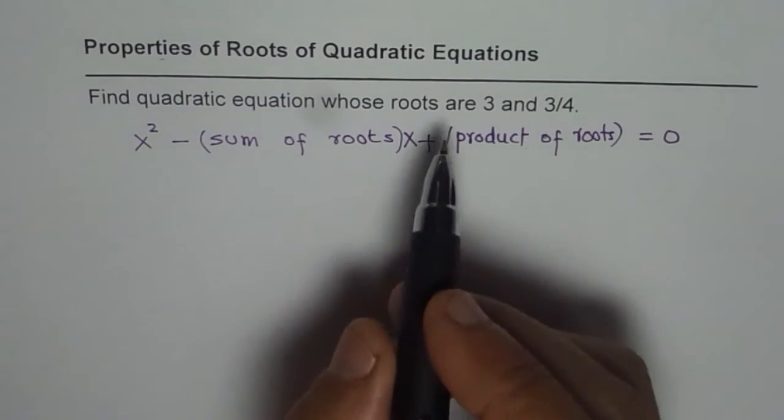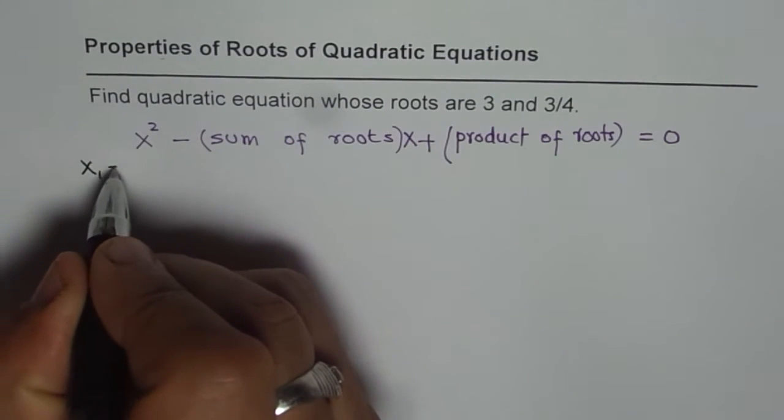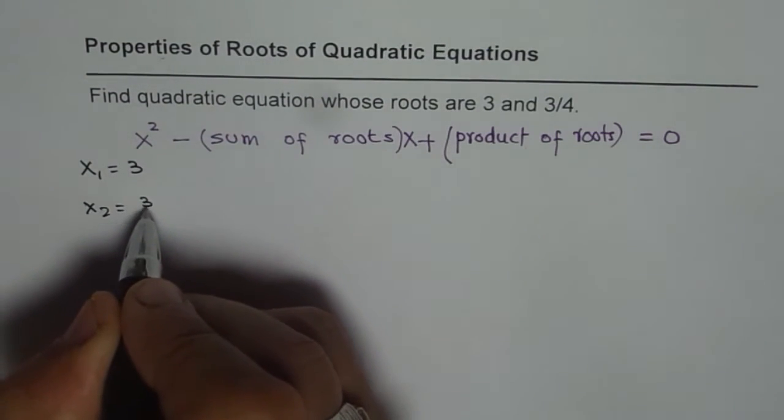Now, what is sum of roots? In this case, the roots are given: x1 is 3 and x2, the second root, is 3 over 4.